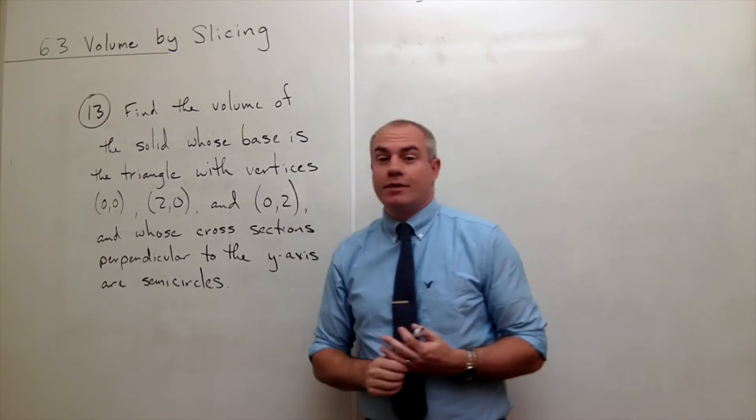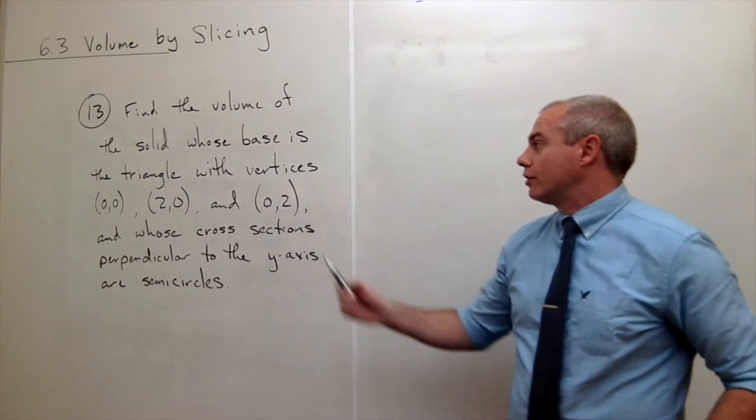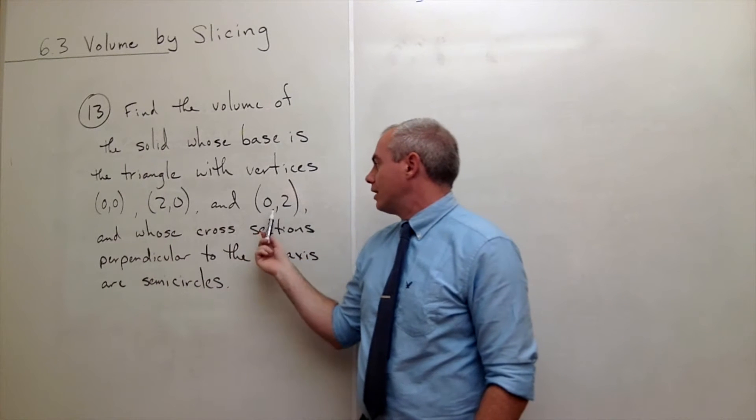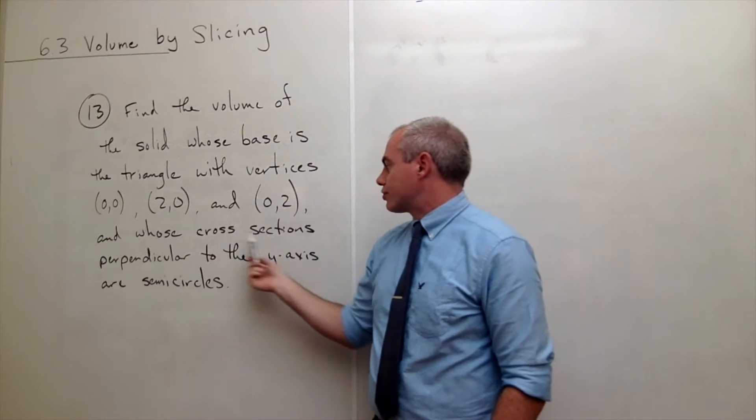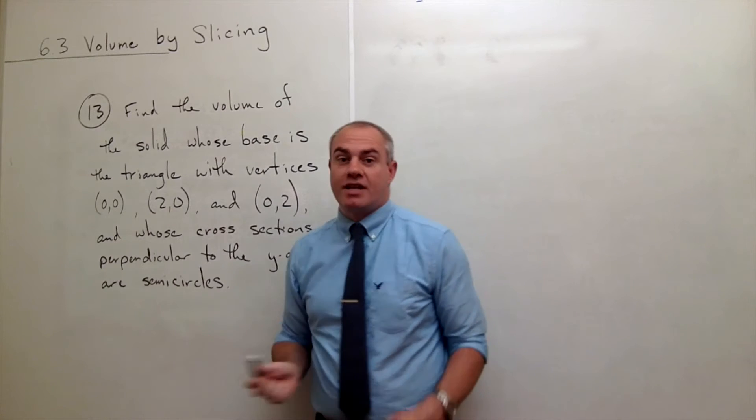In problem 13 we'd like to find the volume of the solid whose base is the triangle with vertices at (0,0), (2,0), and (0,2), and whose cross sections perpendicular to the y-axis are semicircles.